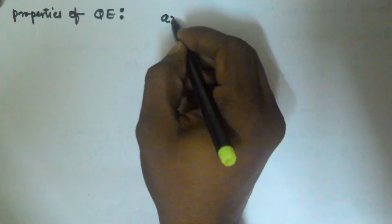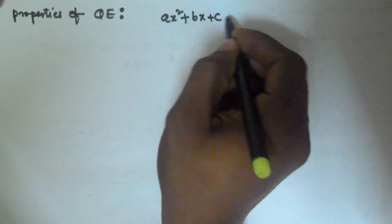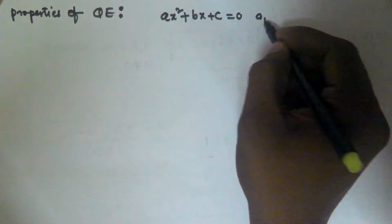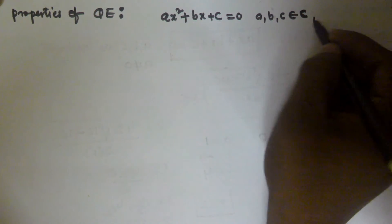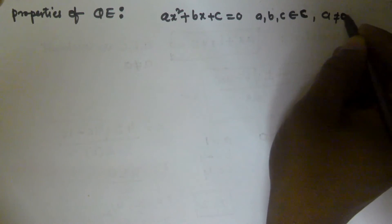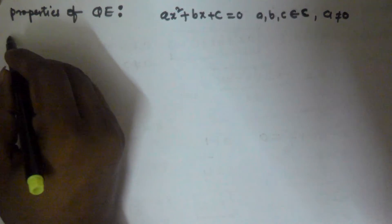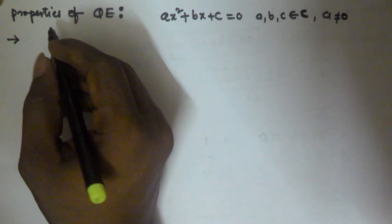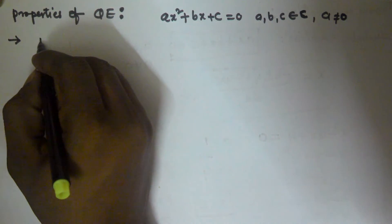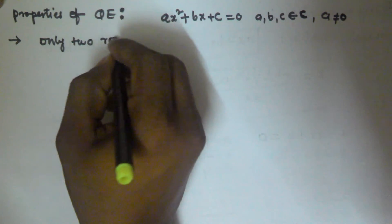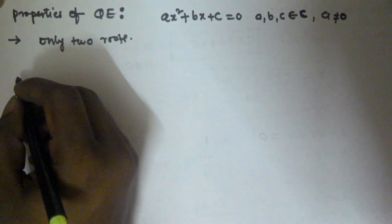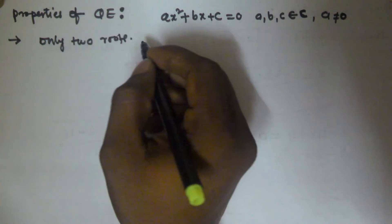Hello friends. In this video we will see the properties of quadratic equations. If a quadratic equation is in the form ax² + bx + c = 0, where a, b, c are constants and a is not equal to 0, then a quadratic equation has only two roots. A quadratic equation cannot have more than two roots — it will always have exactly two roots.